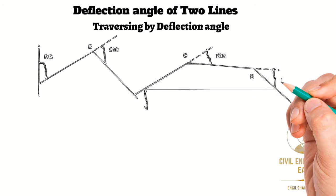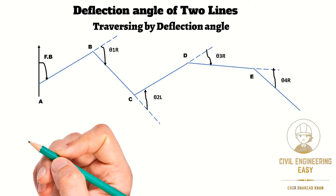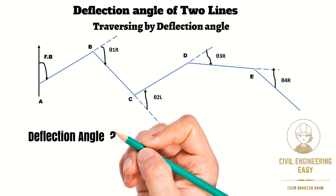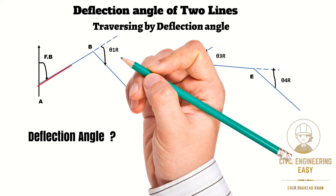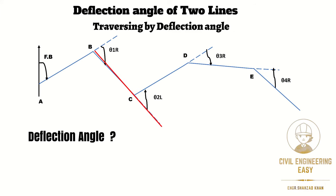The deflection angle is usually calculated for an open traverse. Now first you need to know what is deflection angle. In open traverse, the angle between the extension of a previous line with the forward line is called deflection angle.